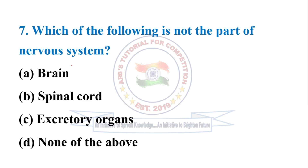Next question, question number seven: which of the following is not part of the nervous system? Brain and spinal cord all belong to the nervous system, except the secretory organs.